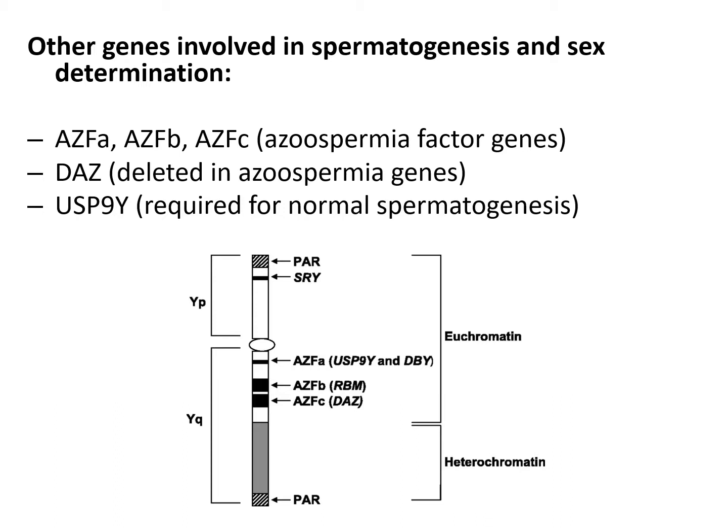There are other genes involved in spermatogenesis and sex development: AZF-A, B, and C — azoospermia factor genes; DAZ — deleted in azoospermia genes; and USP9Y, which is required for normal spermatogenesis. These are a number of other genes involved in further normal male development, but the initial trigger of whether male or female development occurs is about SRY.